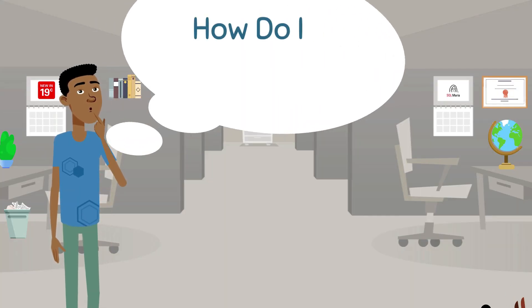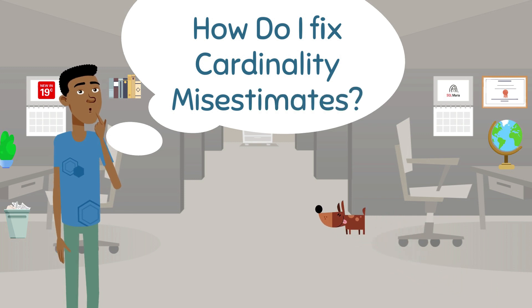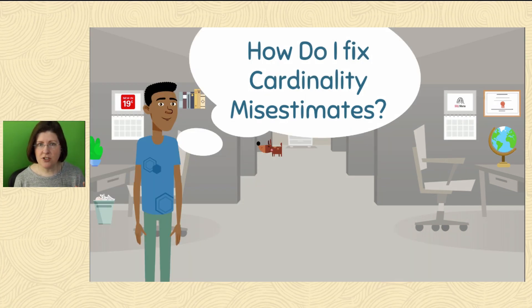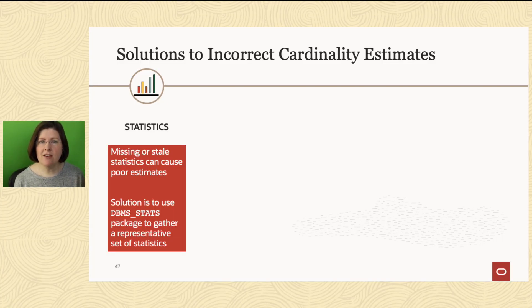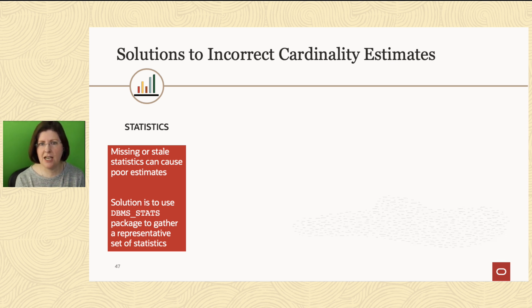What happens when I look at my execution plan, follow all of the steps, and realize my cardinality estimate isn't accurate? What can I do? The first thing I would look for is: do I have any stale or missing statistics? Remember, dynamic sampling may show up in the notes section underneath the plan if you've got missing stats. That'd be the first place I would look — do any of my tables have missing or stale statistics that haven't been gathered in a really long time?